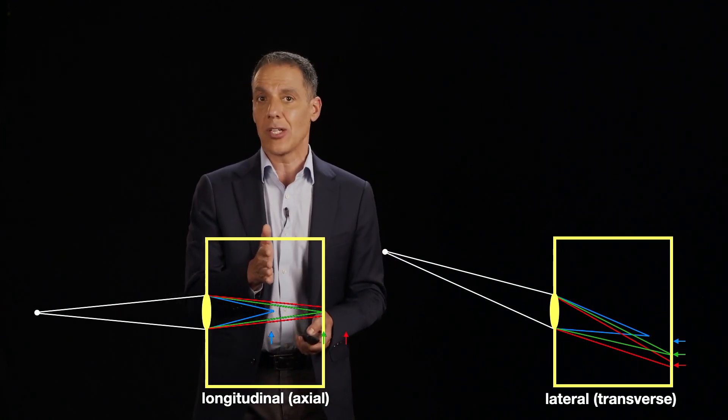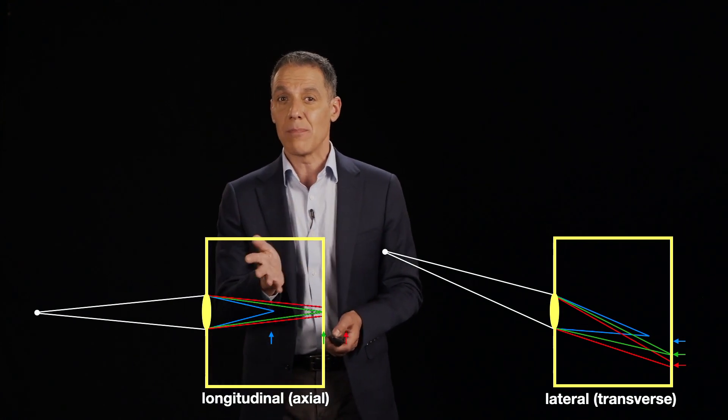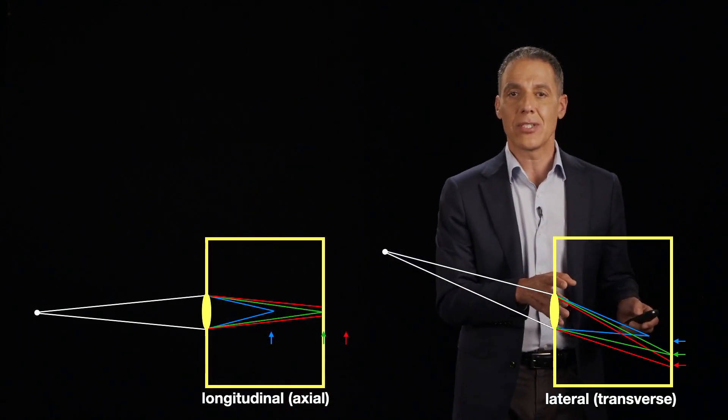So what that means is that the green channel might be focused, but the red and blue may not. And here you have an alignment issue.